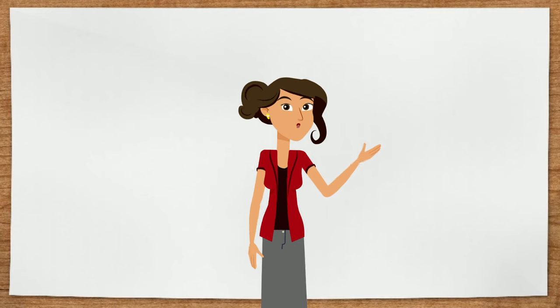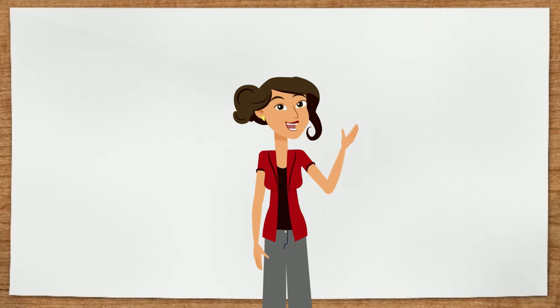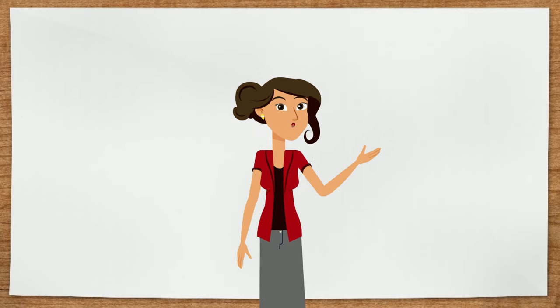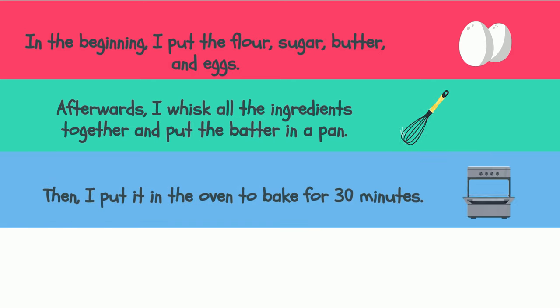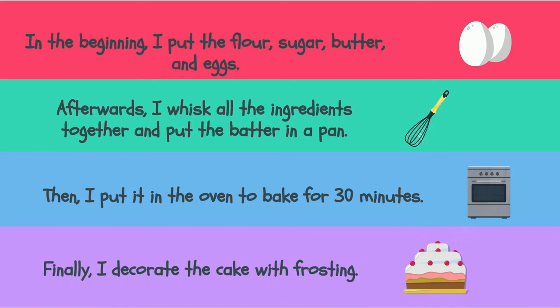Let's try using different transition words in my instructions for how to bake a cake. In the beginning, I put the flour, sugar, butter, and eggs. Afterwards, I whisk all the ingredients together and put the batter in a pan. Then, I put it in the oven to bake for 30 minutes. Finally, I decorate the cake with the frosting.